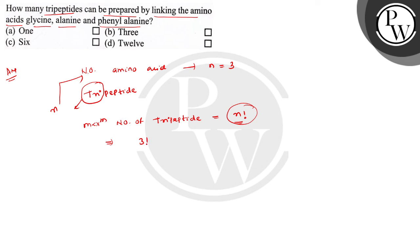3 factorial, that is 3×2×1, equals 6. Six different types of tripeptides can be formed by glycine, alanine, and phenylalanine. So the correct option is C. I hope you understood well.